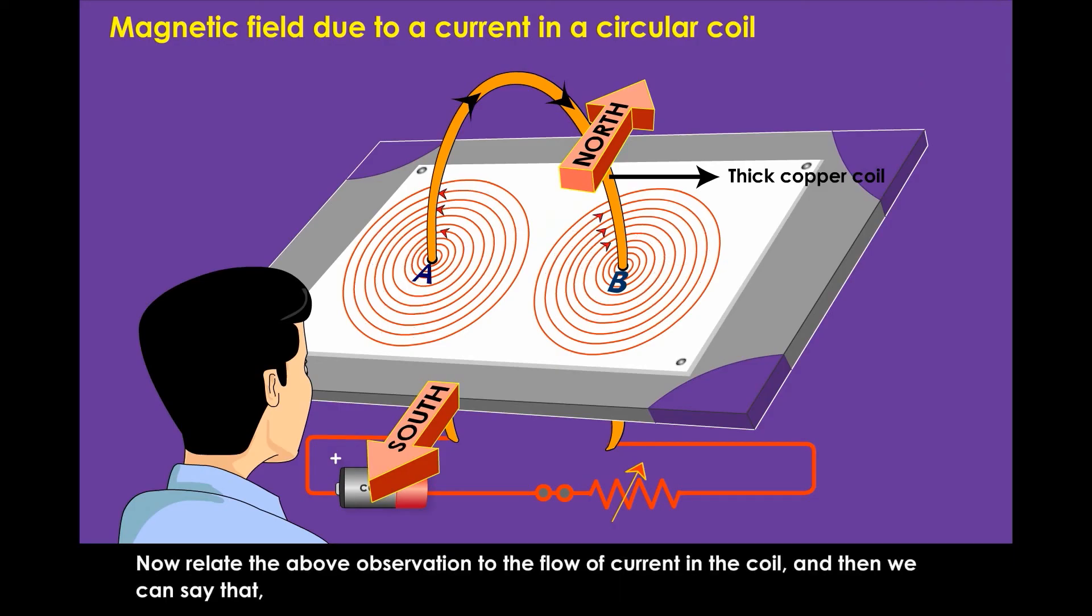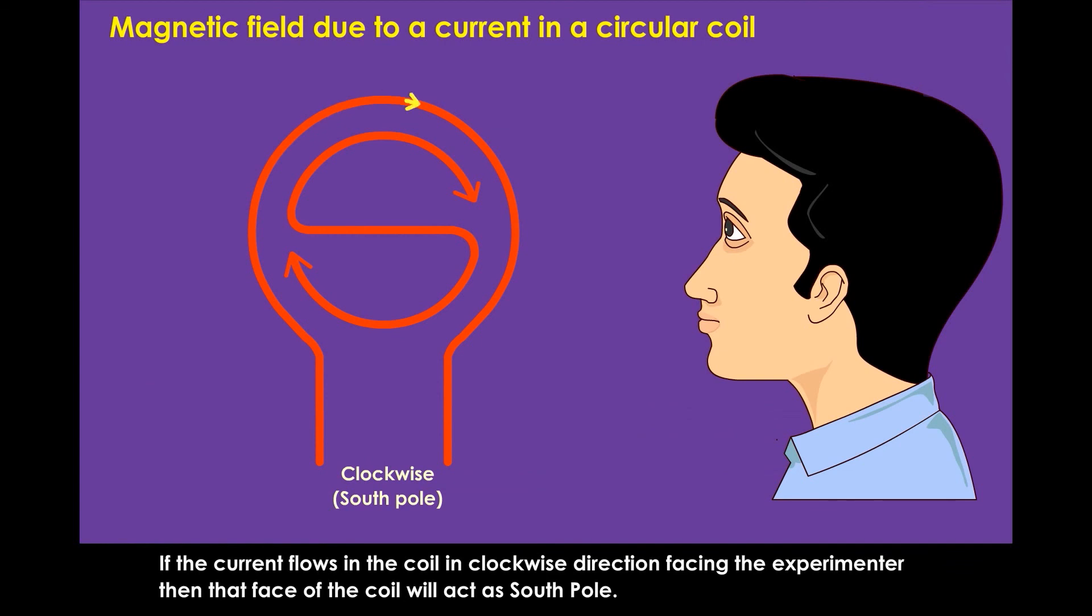Now relate the above observation to the flow of current in the coil and then we can say that if the current flows in the coil in clockwise direction facing the experimenter, then that face of the coil will act as south pole.